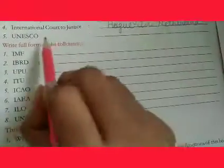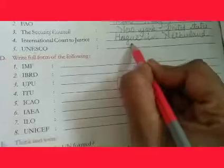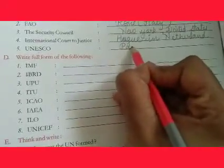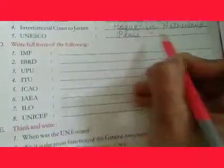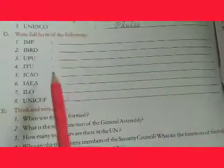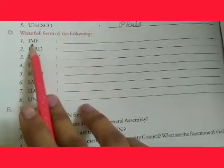Next is UNESCO. The headquarters is situated in Paris — P-A-R-I-S. Now next, we will write the full form of the following.